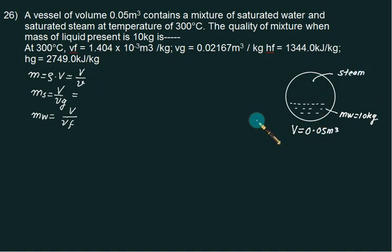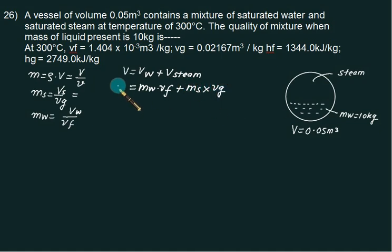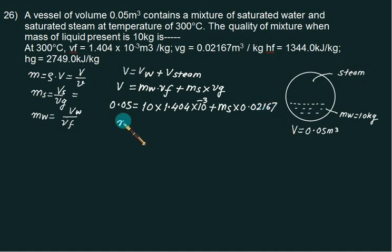The total volume equals volume of water plus volume of steam: V_total = m_water × VF + m_steam × Vg. Substituting: 0.05 = 10 × 1.404×10⁻³ + m_steam × 0.02167. Solving this equation, the mass of steam comes out to be 1.66 kg.